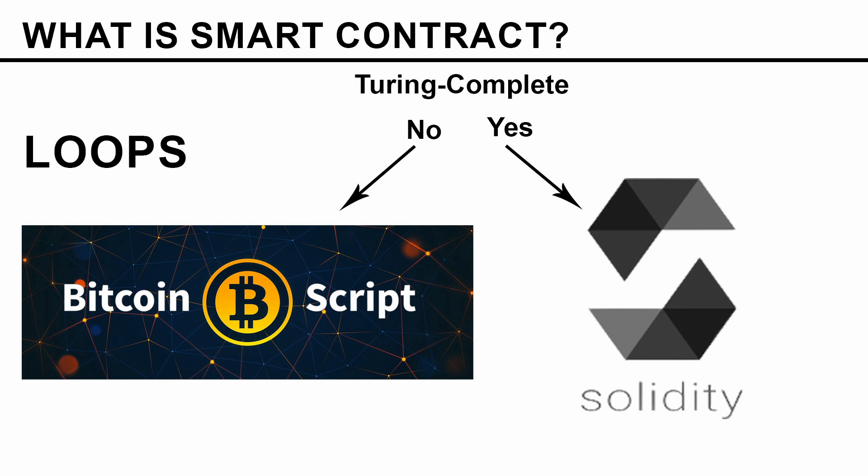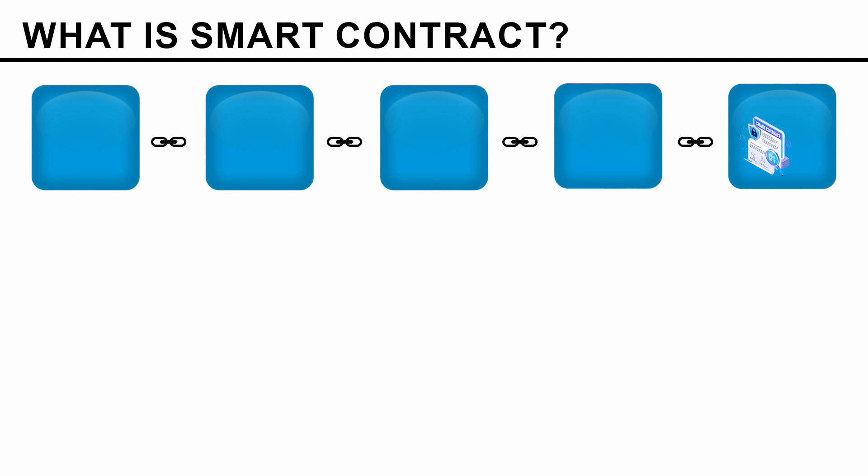So in order to avoid potential problems like infinite loops or running forever, Bitcoin Script decided not to include loops. Solidity, on the other hand, found a way to include loops — we will see how in a later course. Now let's have a look at a blockchain. When a new block is added, instead of adding transaction data in the block, we can include smart contracts.